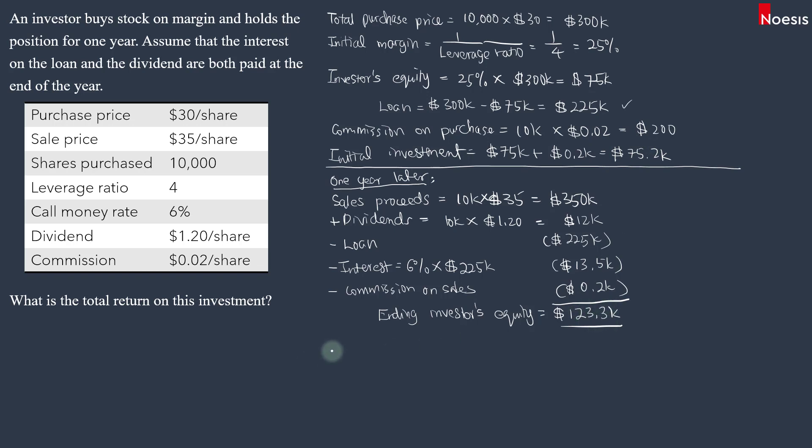What is the return? Return on this investment, which includes the leverage. That will be equals to the ending equity, $123,300 minus the beginning equity, $75,200. Then we divide by the initial equity. Then you multiply by 100%. So this will be equals to 63.96%. This is the leverage return on this investment.